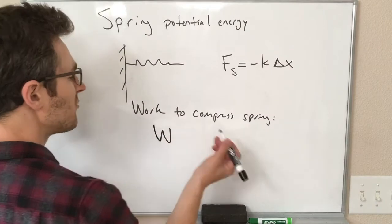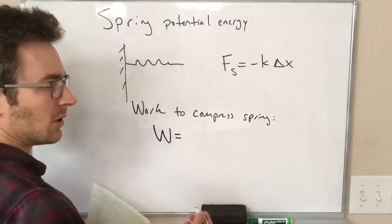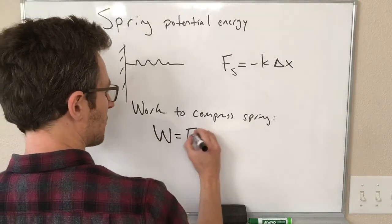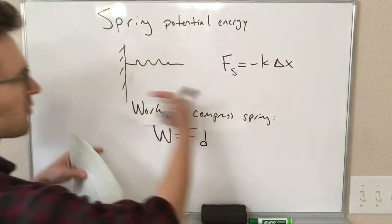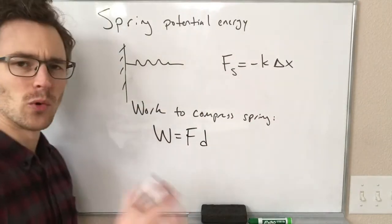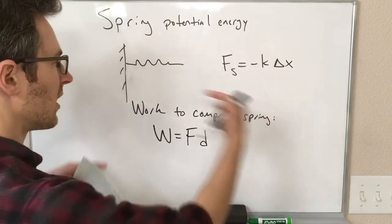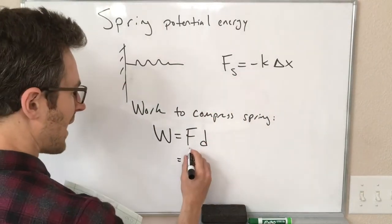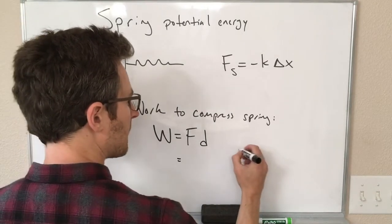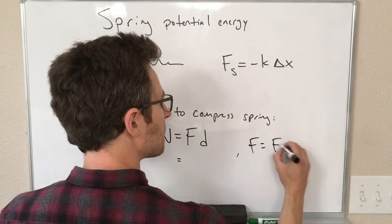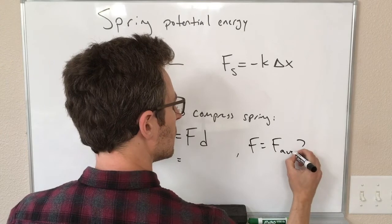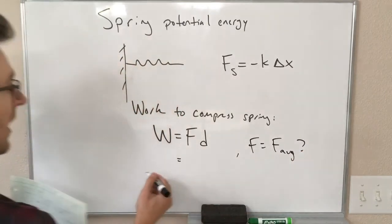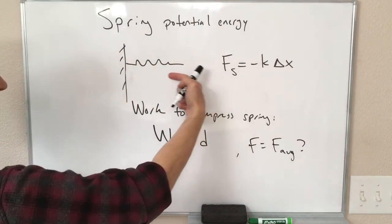Our work, our definition of work is force times distance, and everything's happening just in one direction here, so we're not going to worry about cosine theta. So if we use the average force here, is that something we can do?